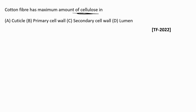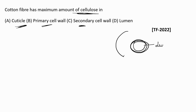The cuticle is the outermost waxy layer containing pectins. Moving inward, we have the primary cell wall, then the secondary cell wall, and then the lumen, which is a hollow layer. The primary cell wall contains a fine network of fibrils, while the secondary cell wall contains concentric layers of cellulose. Since the secondary cell wall has many layers of cellulose, it contains the maximum amount of cellulose. The correct answer is Option C: secondary cell wall.